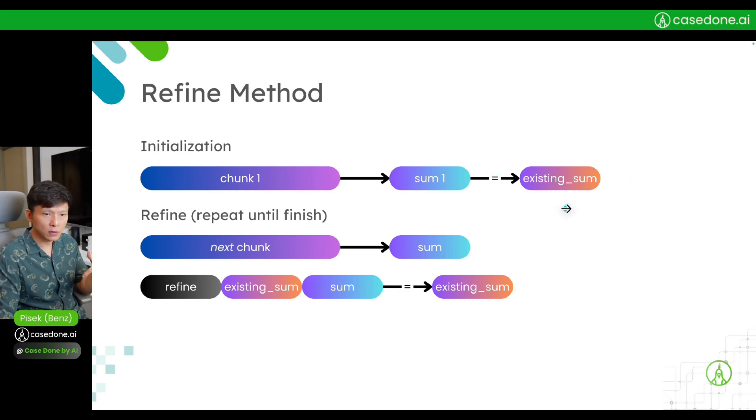...we do it iteratively until we finish the last chunk. For the next chunk, we compute the summary and then ask the model to refine: you give an existing summary and a new summary, refine it to be a new existing summary. This keeps repeating until you've completed all the chunks. This is the refine method. What you need to notice is that there's no way to speed it up - you have to do chunk by chunk because it has to be done in sequence.